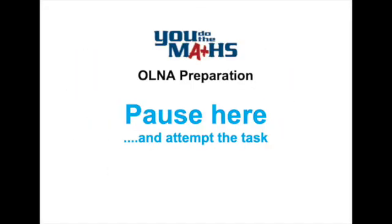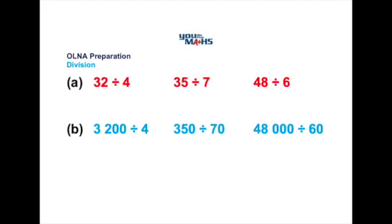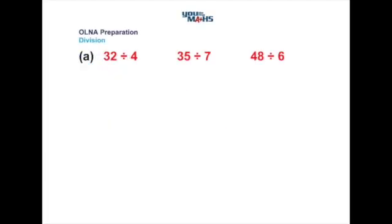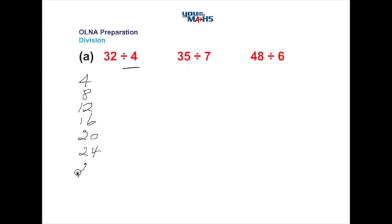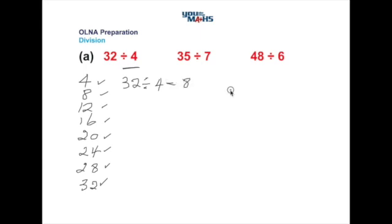Now let's look at some problems involving division. Like before, it's wise to pause and have a go yourself before checking the solutions. The best way to approach division problems is in conjunction with multiplication tables. For 32 divided by 4, look at the four times table, working down the list by adding four each time. Ticking off the list, 32 divided by 4 gives 8, because eight fours are 32 — so there are eight fours that go into 32.